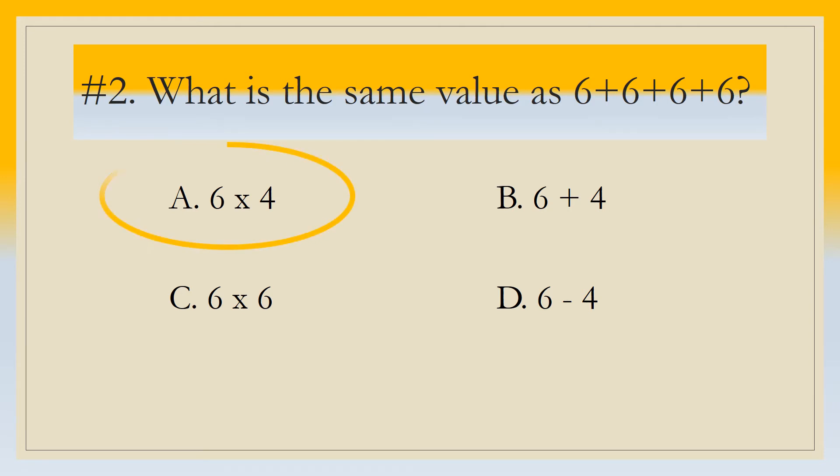In box number two you should have written the letter A or six times four. That is the same value as what is provided for you. Now pause this video and jog in place for a count of ten before moving on. Hit play when you're ready to continue.